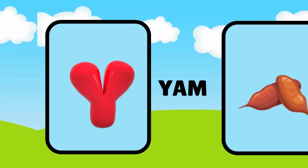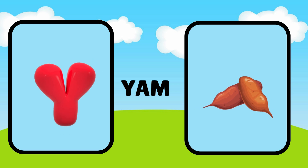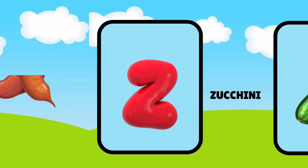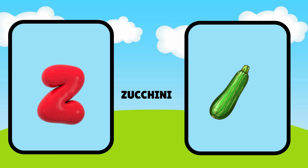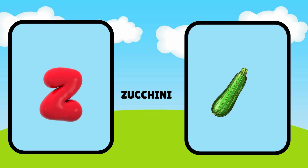Y is for yam, ya, yam. Z is for zucchini, zh, zucchini.